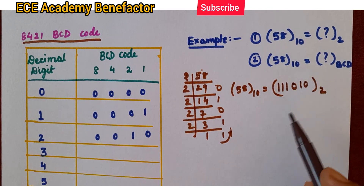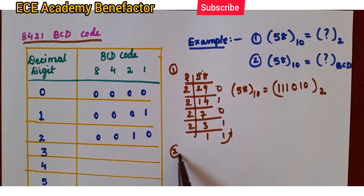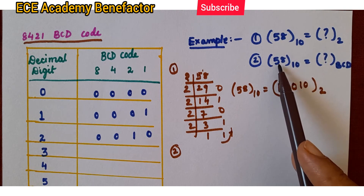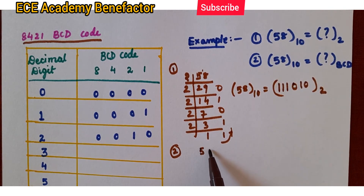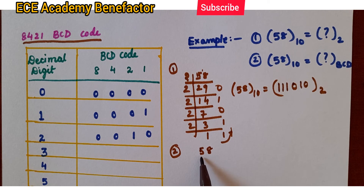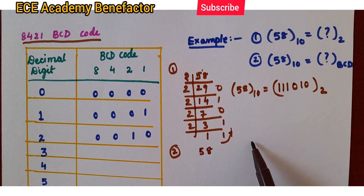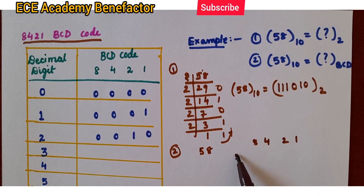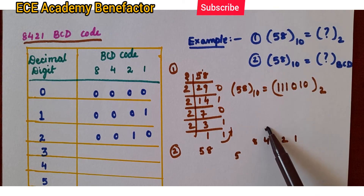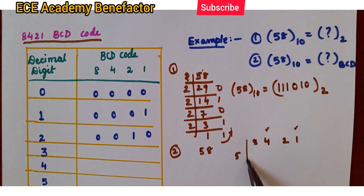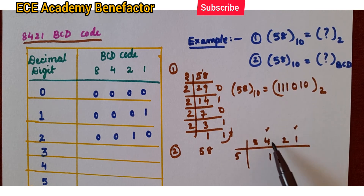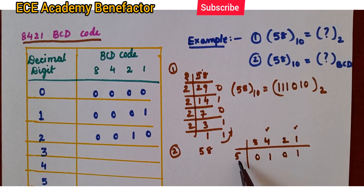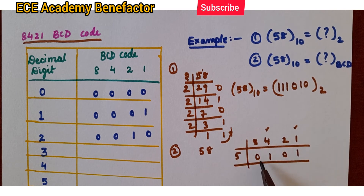What is BCD then? BCD means each decimal digit is to be represented by a BCD number — 8421. So, 8421 is a BCD code. For 5, to write 5, we take the combination 4 plus 1. 4 plus 1 is 5, so we put 4 and 1 as 1 and under the others we put 0. So, 5 decimal in BCD is 0101.